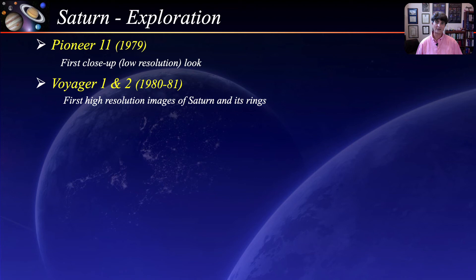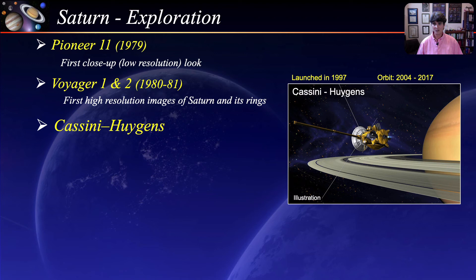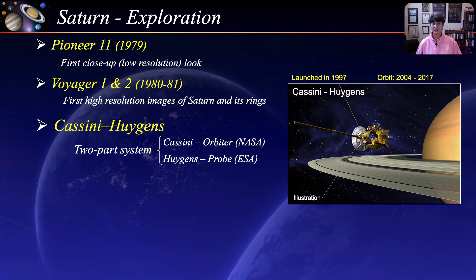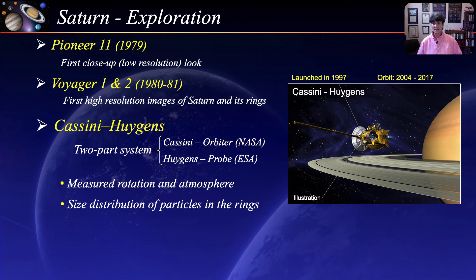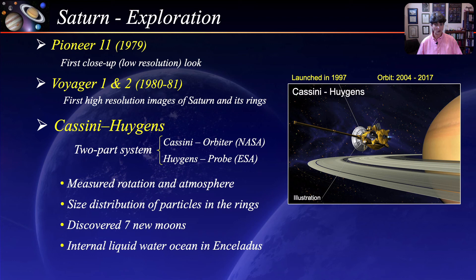But it wasn't until the Cassini-Huygens mission that we started to learn about the planet in greater detail. Launched in 1997 and entering orbit in 2004, it became the first spacecraft to orbit Saturn. Cassini was the NASA orbiter and Huygens was the European Space Agency's probe, released from Cassini in December 2004 and landing three weeks later on Saturn's moon Titan — the first probe to land on an outer solar system body. Key findings include accurately measuring Saturn's rotational period, studying its dynamic atmosphere, measuring the size distribution of particles in the rings, discovering seven new moons, finding evidence of a large salty internal ocean of liquid water in Enceladus, and discovering large liquid hydrocarbon lakes on Titan.